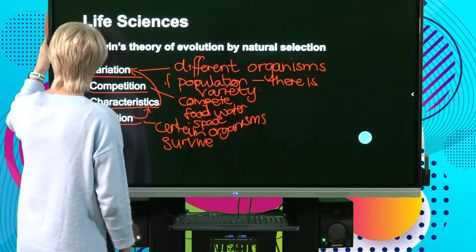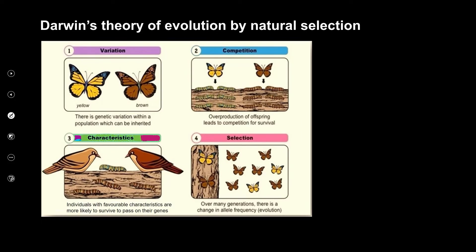Let's look in a little more detail using a diagram. In this example we're using butterflies, and in this population of butterflies there is variation — yellow butterflies and brown butterflies. So there is genetic variation within the population.